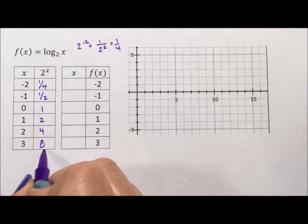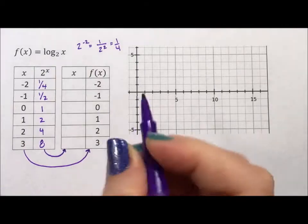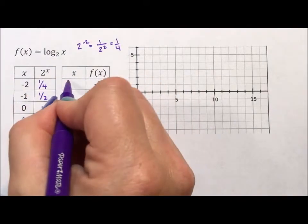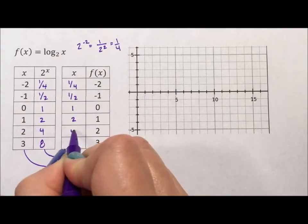Inverse means your x's become your y's and your y's become your x's. So I've already moved the x's to my y's, but now this becomes 1 fourth, 1 half, 1, 2, 4, and 8.